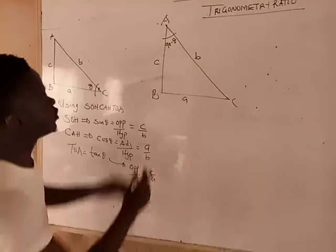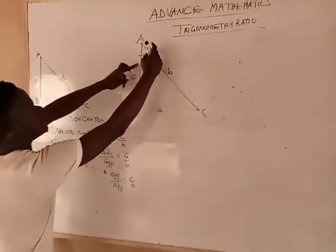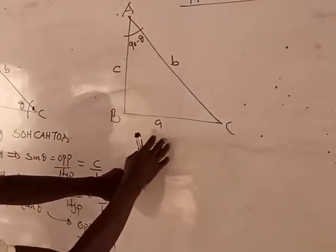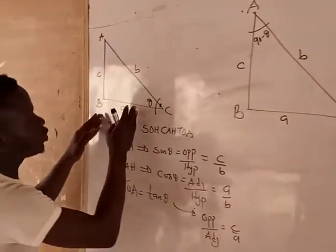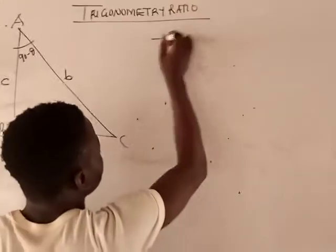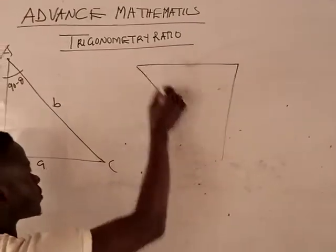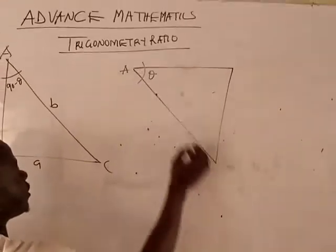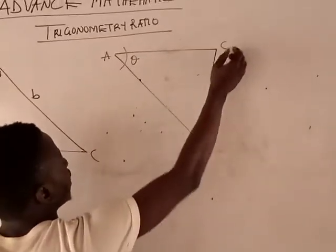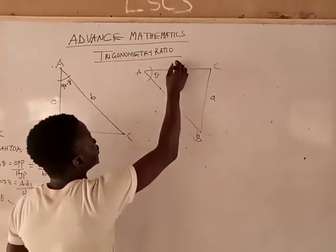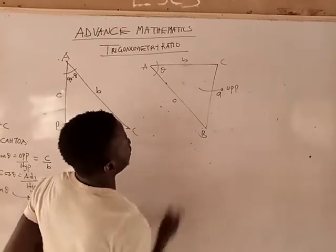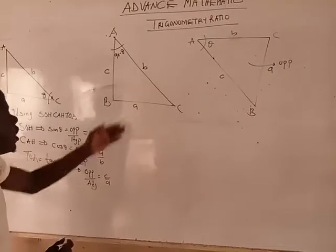On this triangle, the angle is right there on A, so this A will become the opposite. When I have this triangle, the A will become the opposite. If I have another triangle like this and I place an angle here with sides A, B, C, the opposite will be right here. But looking at this triangle,